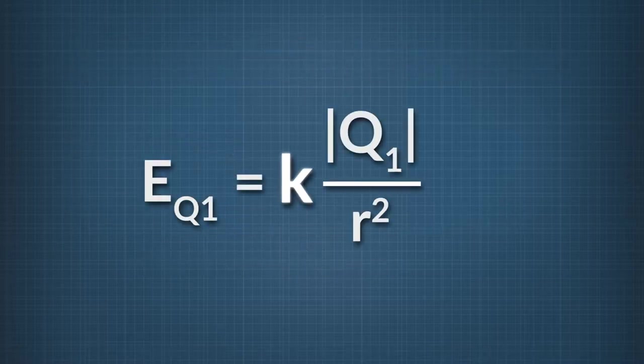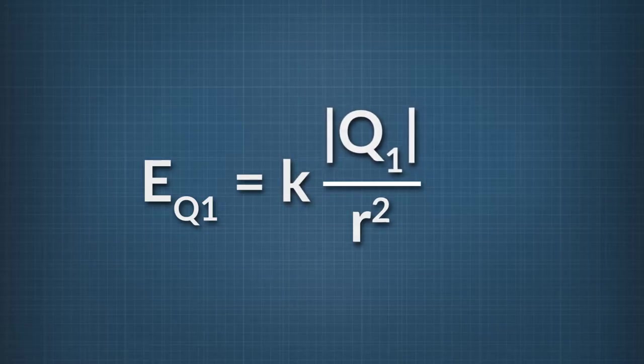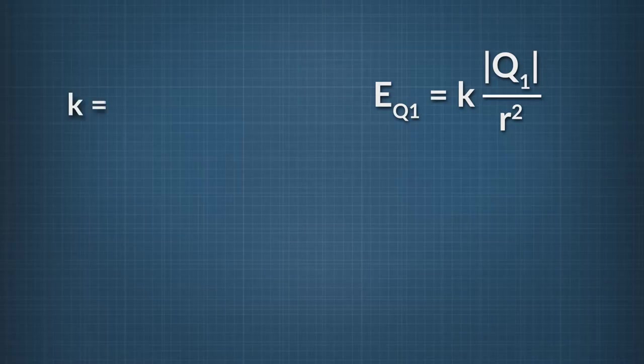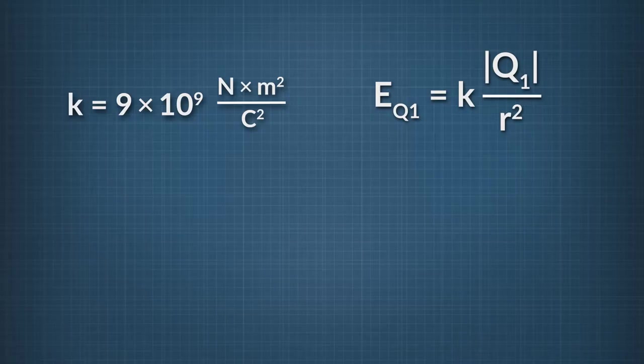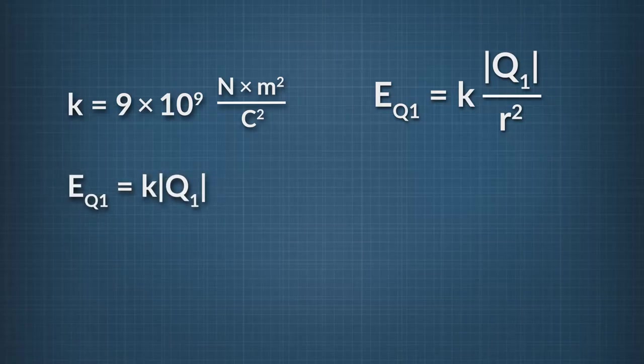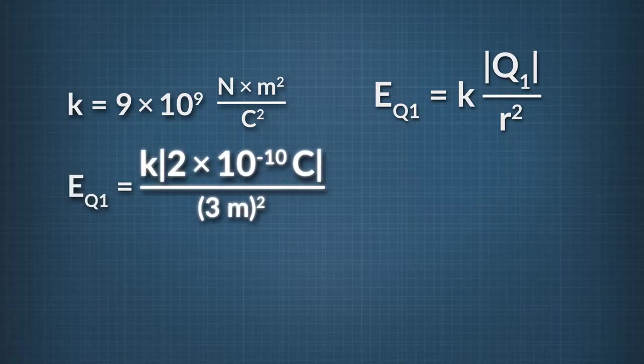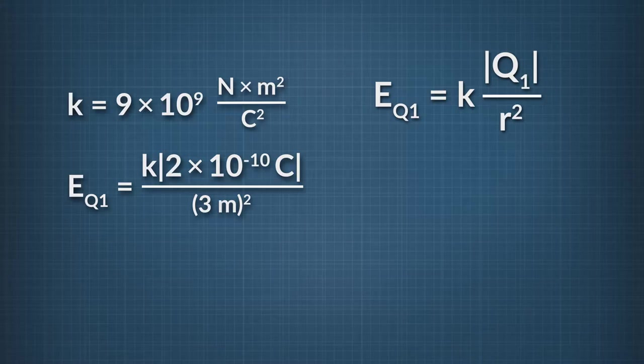Electric field is equal to K times the absolute value of Q1 divided by the distance squared. The constant K is 9 times 10 to the 9th Newton meter squared divided by Coulomb squared. So the electric field at Q2 due to Q1 equals K times the absolute value of Q1, which is 2 times 10 to the negative 10th Coulombs divided by 3 meters, which equals 0.2 Newtons per Coulomb.